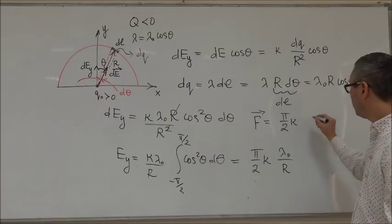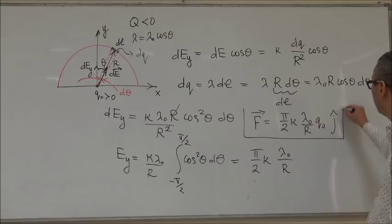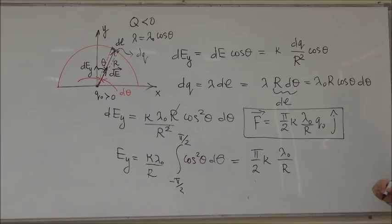So, that would be equal to pi over 2 K lambda 0 over R times Q0, and the unit vector J, because it's pointing in the positive Y direction. So, this is the force experienced by the charge Q0.